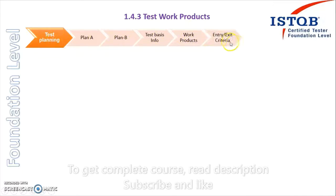The next item in the test planning phase is the entry and exit criteria. For each phase, we define what the entry and exit criteria are. For example, for the design phase, the entry criteria will be that we have the test analysis report — which things we can test and which we cannot. The exit criteria will be that we have the test cases and traceability is provided.